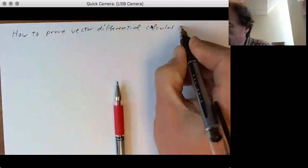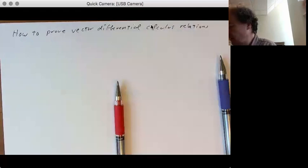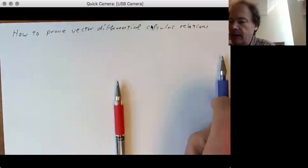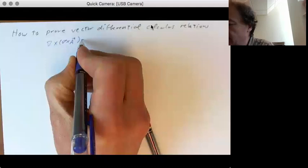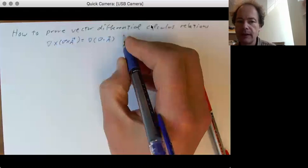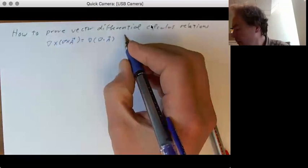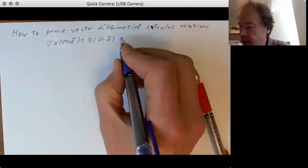Now in class, we talked about one particular relation, that is del cross del cross a is equal to the gradient of the divergence of a, or sorry, minus the Laplacian.